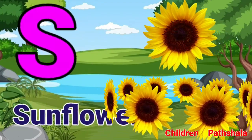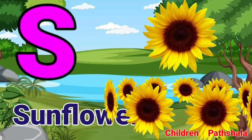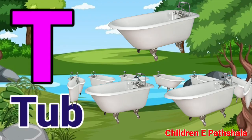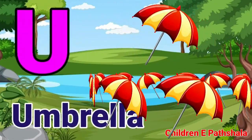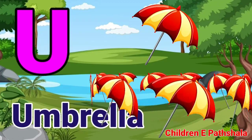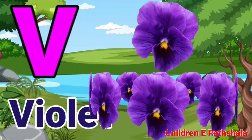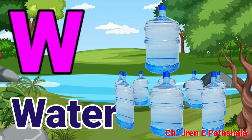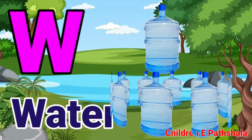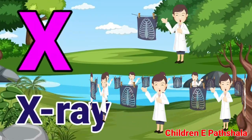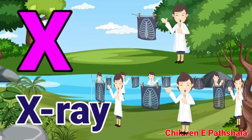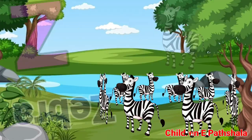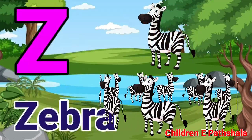S for Sunflower, T for Tube, U for Umbrella, V for Violet, W for Water, X for X-Ray, Y for Yo-yo, Z for Zebra.